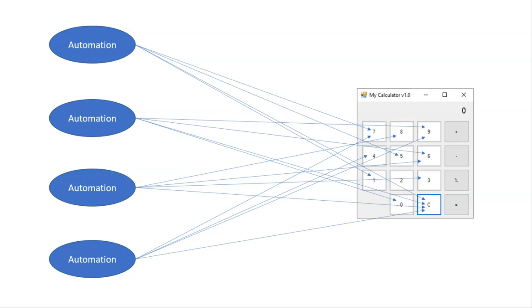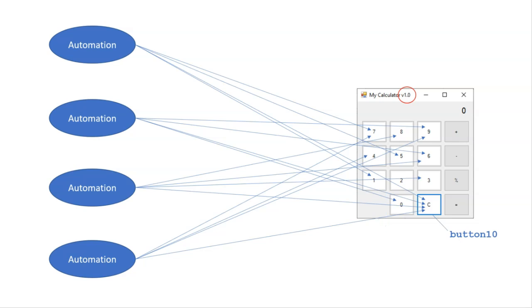The funny thing about applications is they have a version number, and the reason why they have that is that applications change — they always change. In version 1, there's a clear button at the bottom row, and inside the code it's defined as button 10. A lazy programmer didn't name the button according to its function. So in version 1.1, they moved the button, and more importantly, the programmer renamed it inside the code — now it's called button_clear instead of button 10. That leaves us with all of these activities and selectors involving the clear button no longer working. So we have four broken automations.